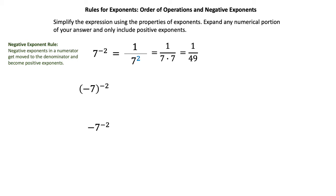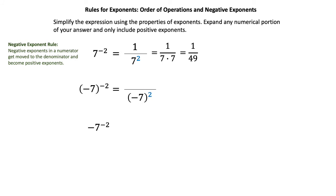In the second example, parentheses around negative 7 raised to the negative 2 power means the entire expression is raised to this negative 2 power. We move the entire expression to the denominator, keeping negative 7 inside the parentheses but changing the exponent from negative 2 to positive 2. We place a 1 in the numerator. Multiplying two negative 7s together in the denominator gives a final answer of positive 1 over 49.